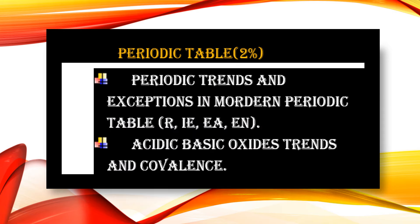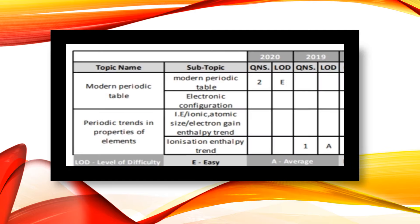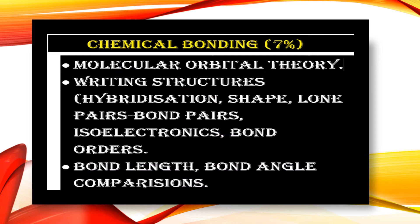The Periodic Table holds 2% weightage. The most important subtopics are periodic trends and expected exceptions in the modern periodic table. You should revise and remember terms like atomic radius, ionization energy, electron affinity, electronegativity, along with acidic and basic oxide strengths and covalence. In 2020, two easy questions were asked from the modern periodic table, and in 2019 an average-difficulty question was asked on ionization enthalpy trends.